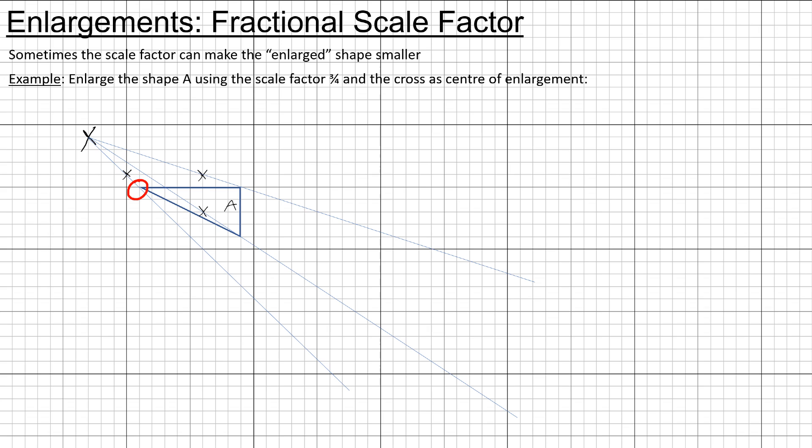From the center of enlargement I've gone four to the right and then four down. So three-quarters times four—well, the fours will cancel out leaving me with three. So that means I need to go across three, down three to this point.